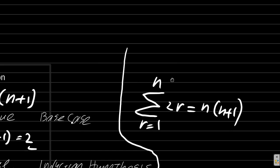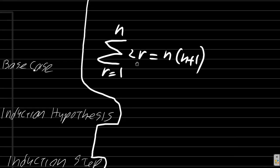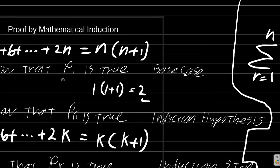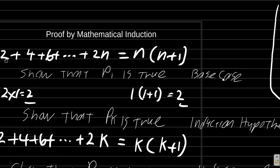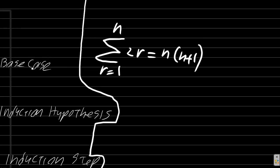So in this case, we are summing from r equals 1 to n of 2r. For the first term, r is 1, so 2 times 1 is 2. Second term, r is 2. Third term, r is 3, so 2 times 3. And so on.